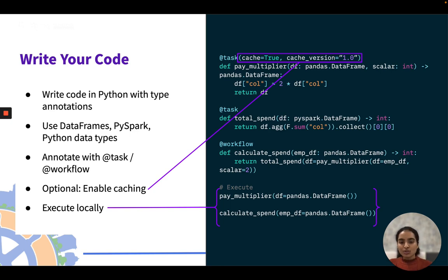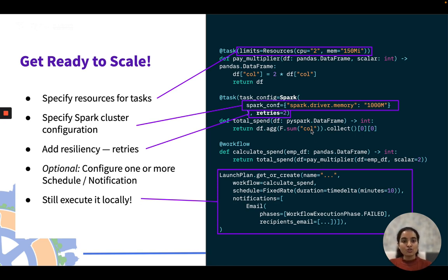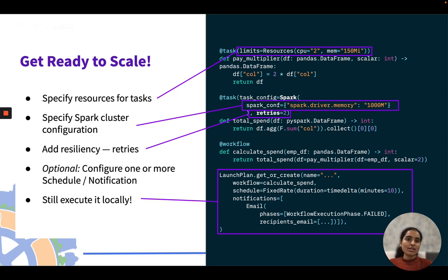If you want to scale your code and specify resources for your tasks, you simply declare CPUs, memory, and GPUs in the task. If you have Spark code, you can specify the Spark cluster configuration by installing the FlightKit Spark plugin. You can also specify retries — setting retries to 2 means if the task fails, Flight will attempt to run it again up to twice.